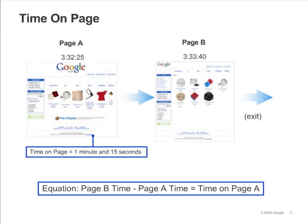In order for this calculation to take place, the Google Analytics tracking code must be executed on both pages. The time on page for page B is 0 seconds because there is no subsequent timestamp that Google Analytics can use to calculate the actual time on page.